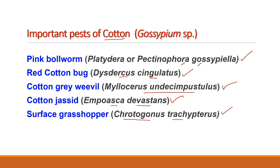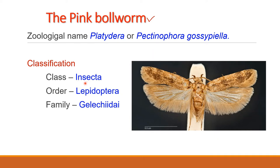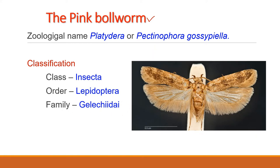First, I am going to discuss the biology of Pectinophora gossypiella, the pink boll worm, which causes severe damage to the cotton crop worldwide. I will address its systematic position, distribution, general features, points of identification, habits, life cycle, nature of damage, and control measures. Pectinophora gossypiella belongs to class Insecta, order Lepidoptera, and family Gelechiidae.